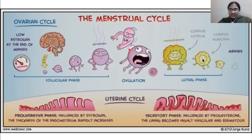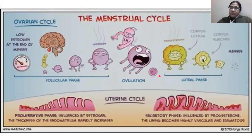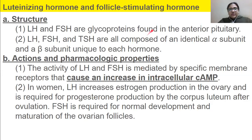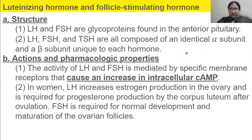We are focusing on FSH — how to make the follicle grow faster and better — and on LH to ensure ovulation is happening. Structurally, LH and FSH are glycoproteins found in the anterior pituitary. FSH, LH, and TSH are all composed of an identical alpha subunit and a beta subunit that is unique to each hormone.